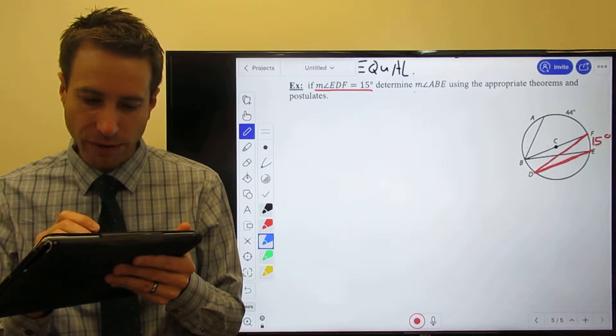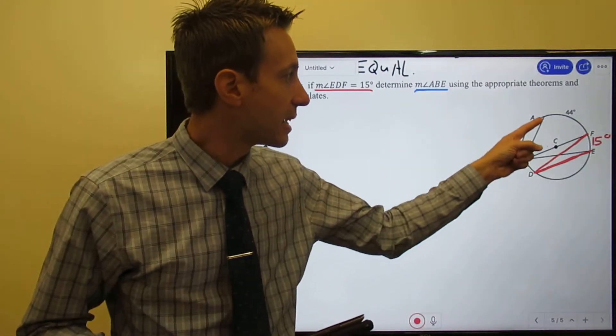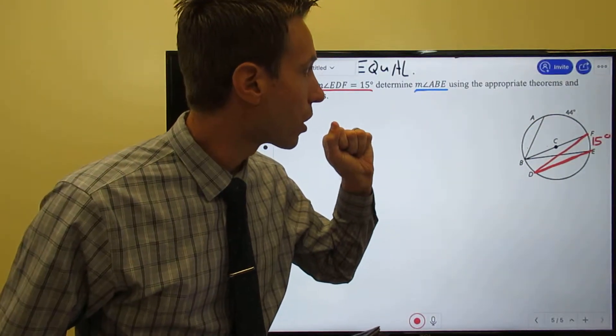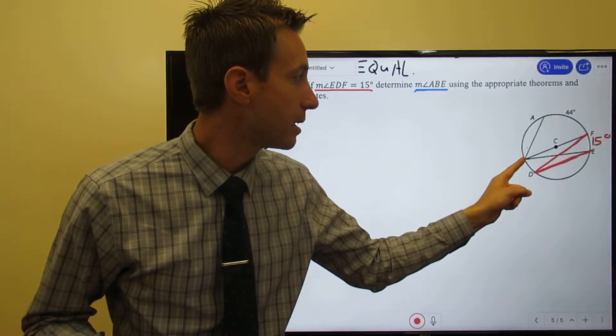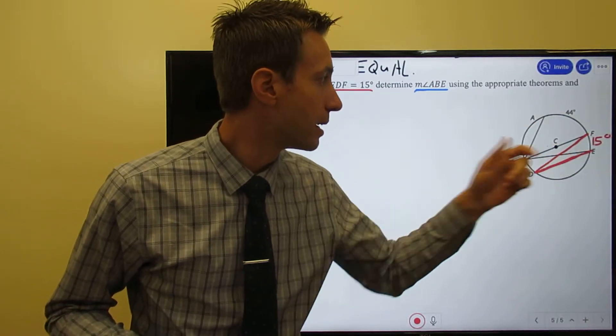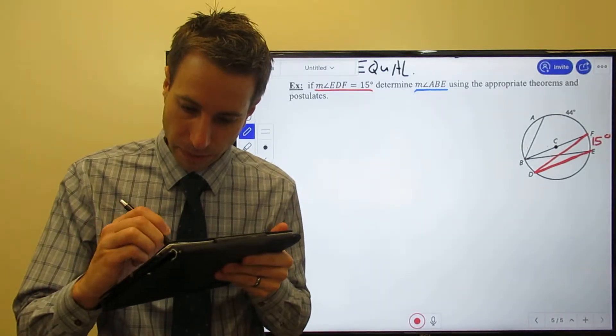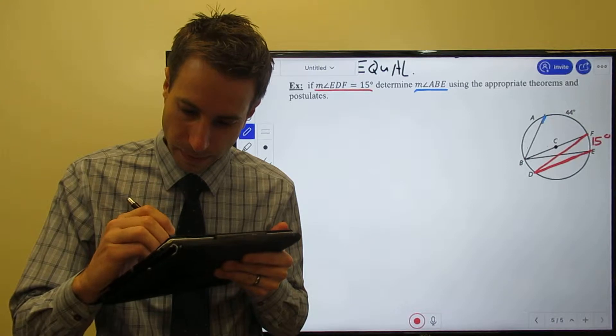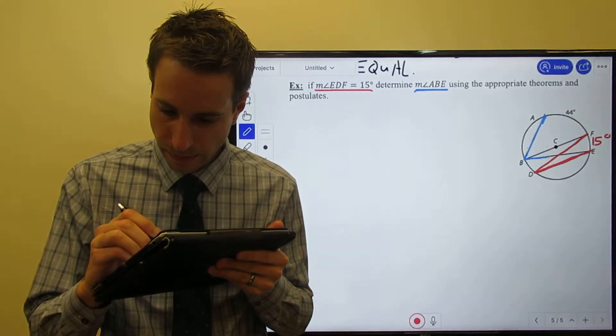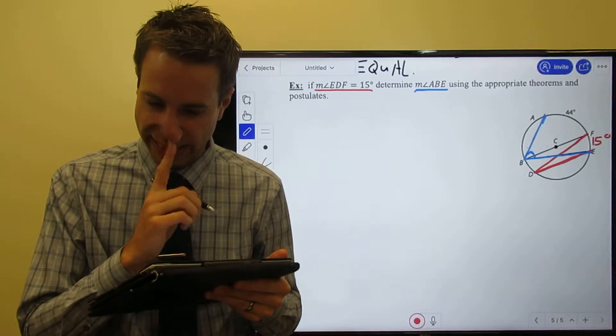Here's what I ask you to find. I ask you to find the measure of ABE. A, B, E. I want to find the measure of ABE. Let me do that one in blue.